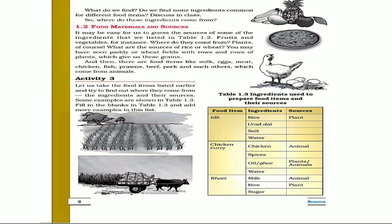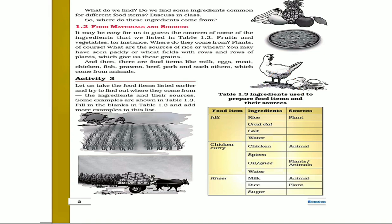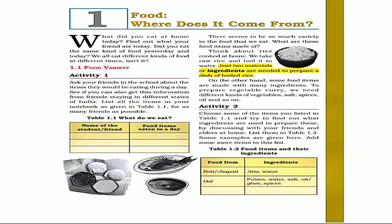We will be discussing Activity 3. Let us take the food items listed earlier and try to find out where they come from. We will note the food items, the ingredients, and the sources — that is, the ingredients as well as the sources.